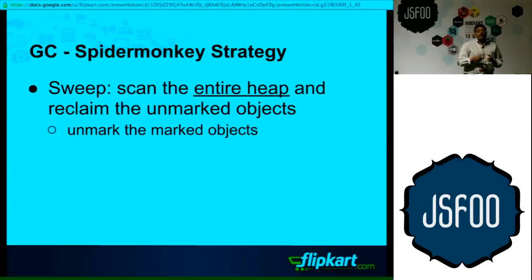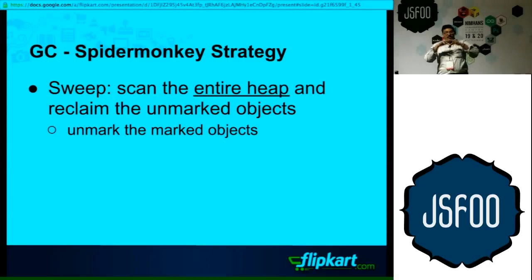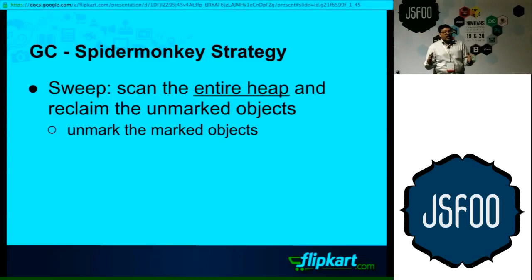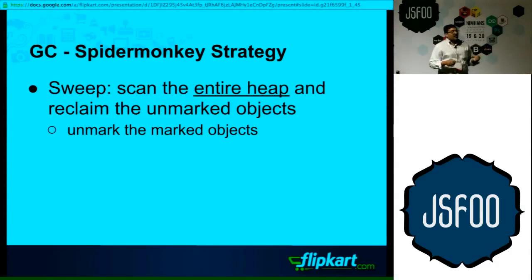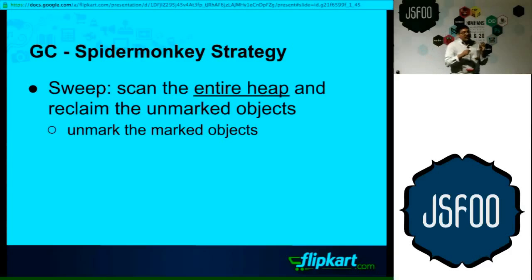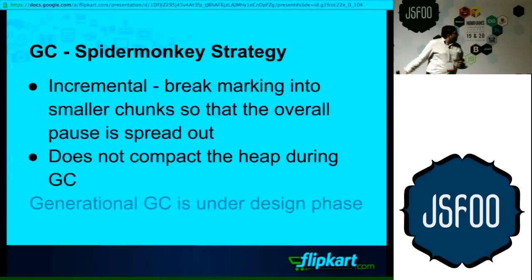What SpiderMonkey in Firefox 16 came up with is incremental mark processing. The traditional mark process is a stop-the-world process where it stops JavaScript execution, finds all the objects, cleans them, and then resumes. Now they have spread out the marking over a larger period of time. So if a traditional garbage collection takes 100 milliseconds in one stop, they have divided it into 10 stops, doing garbage collection in cycles of 10 milliseconds each. Within those 10 milliseconds, your application can respond and performance is much better.